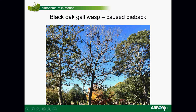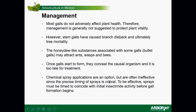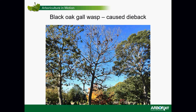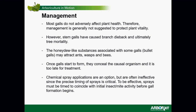This is an example of the dieback that has been caused by one of the stem gall wasps — in this case, the black oak gall wasp on Cape Cod. These cause swelling at the ends of the branches, restricting water and nutrient movement. And then over a matter of three to four years, there's enough restriction and dieback to actually cause tree mortality. Most galls do not adversely affect the health of the plant, and so management is not necessary in most cases. However, there are cases where dieback and tree mortality can occur, so management options may be necessary.